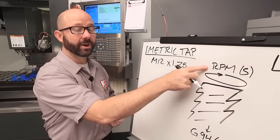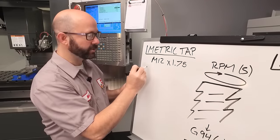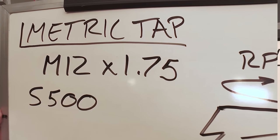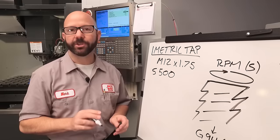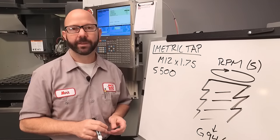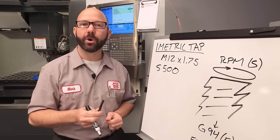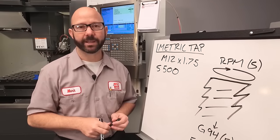The first piece of our puzzle is our RPM. We're going to use S500. Now for your real tap, you need to contact your tap supplier to find out what speed they recommend based on your tap style, the coating on your tap, and the material being cut.